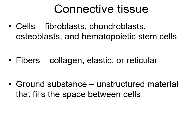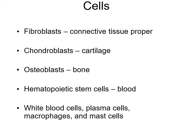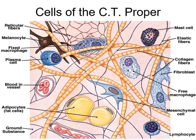Fibers include collagen fibers, elastic fibers, and reticular fibers - each tissue has different amounts and concentrations. Ground substance is the material in between, including GAGs (glycosaminoglycans), which are sugar-protein-sugars that provide material to adhere to. Cells in connective tissue: fibroblasts are part of connective tissue proper; chondroblasts form cartilage; osteoblasts form bone; hematopoietic stem cells become blood cells, including white blood cells, plasma cells, macrophages, and mast cells.